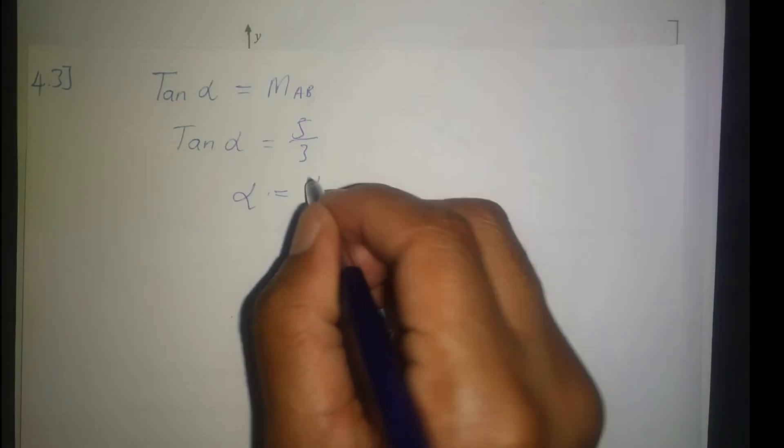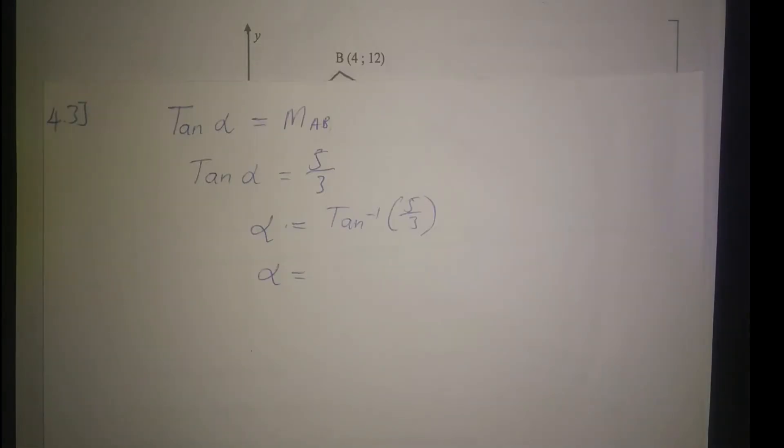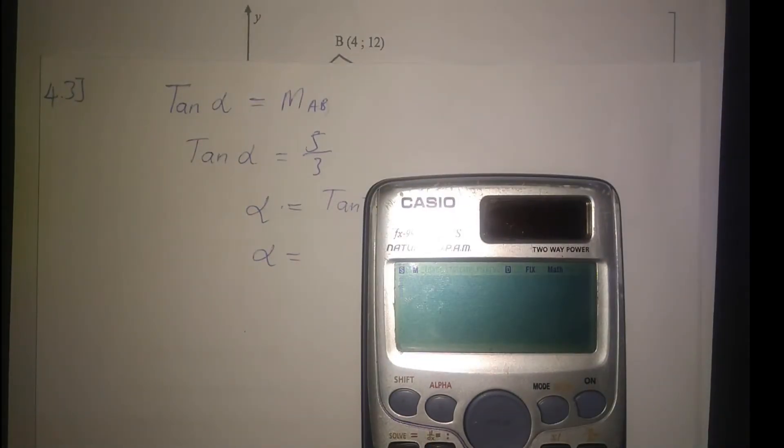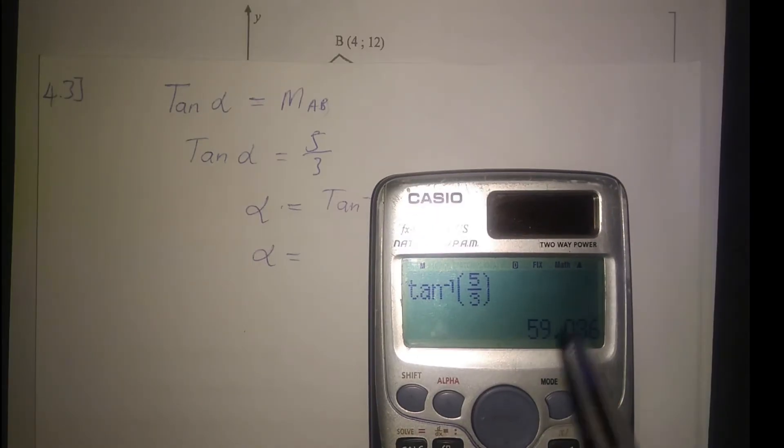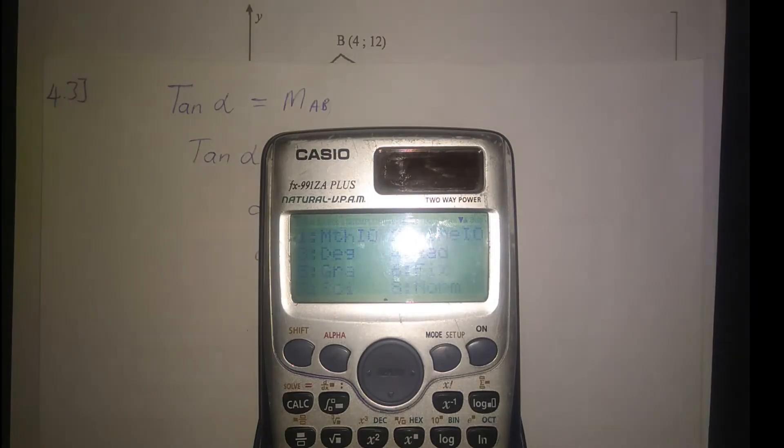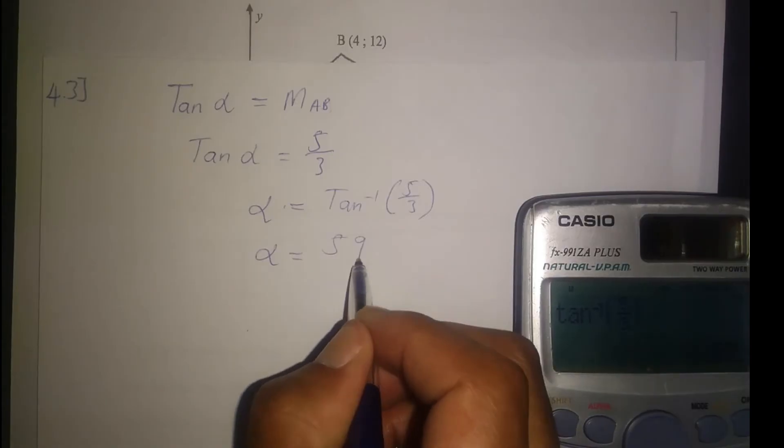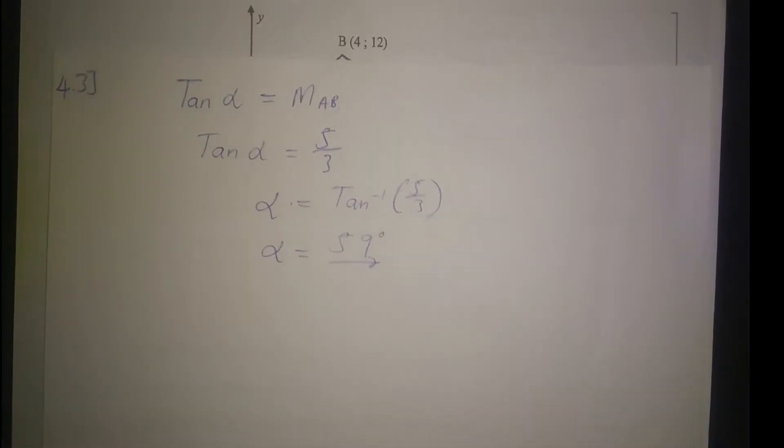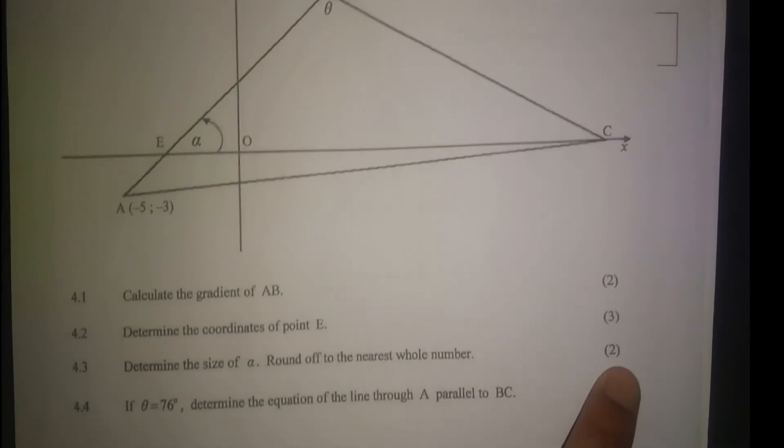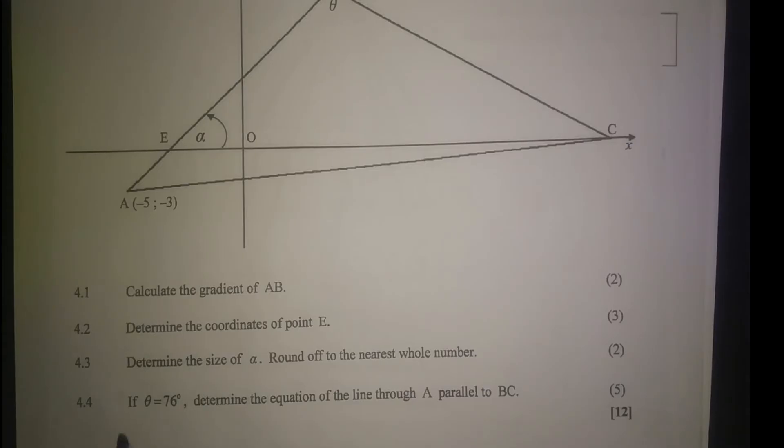So tan alpha equals 5/3. Therefore alpha equals arctan(5/3), which equals 59 degrees. Round off to the nearest whole number is 59 degrees.